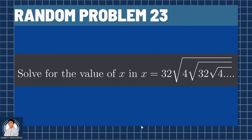So here is our Random Problem 23. Solve for the value of x in x equals 32 square root of quantity 4 square root of quantity 32 square root of 4 and so on. As we can see, the 32 and 4 repeats in a nested radical.